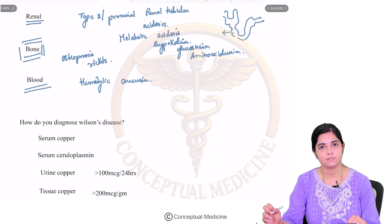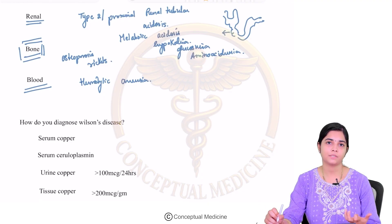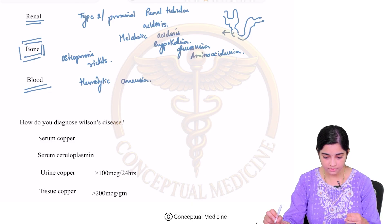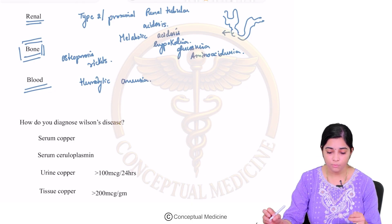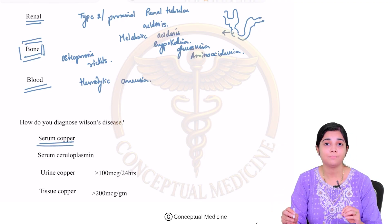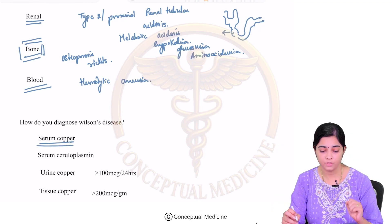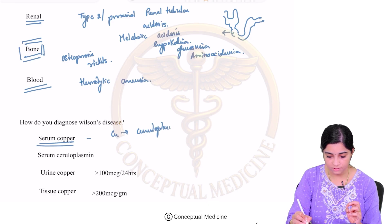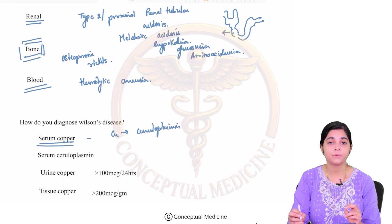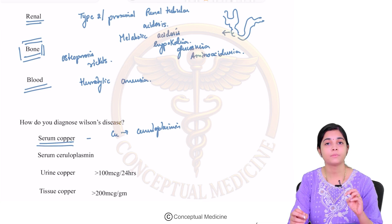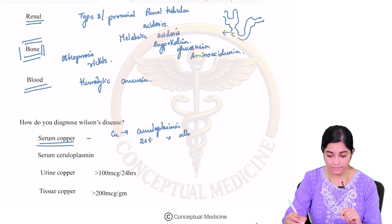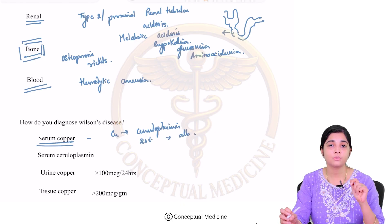Now how do you diagnose Wilson's disease? We have understood the basic pathogenesis and the gene defect. What happens to the serum copper? The serum copper that we measure is usually the copper that is bound to ceruloplasmin, about 20% of which is bound to albumin.